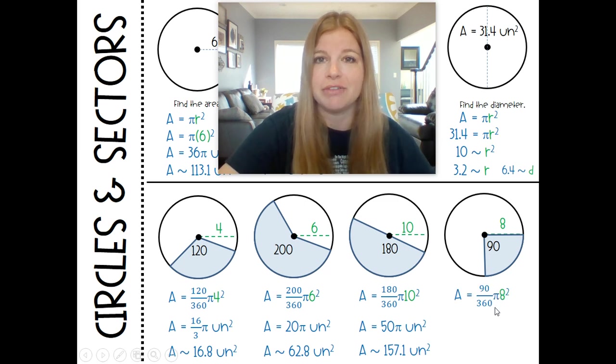And then 90 is 90 at 360 is really just 1 fourth. So 8 squared is 64. A fourth of 64 is 16. So it's 16 pi or 50.3 units squared.